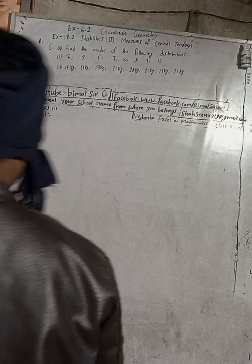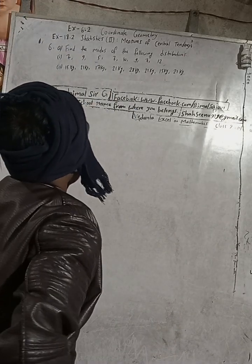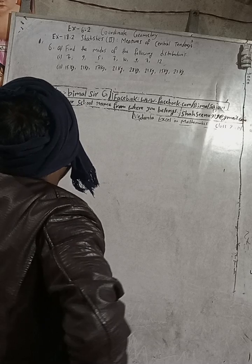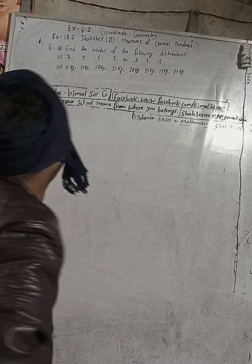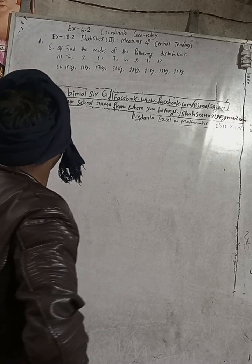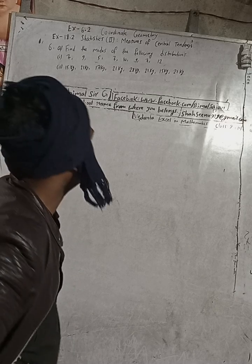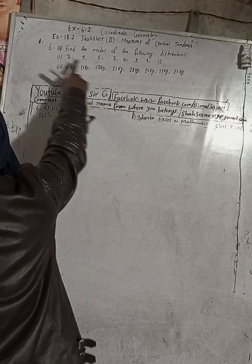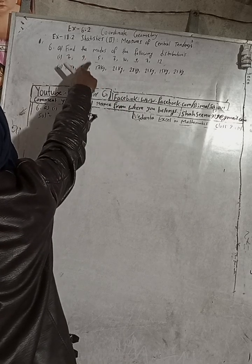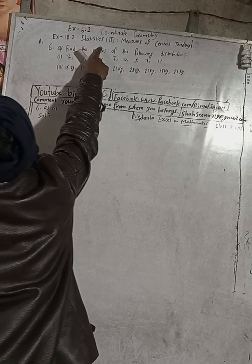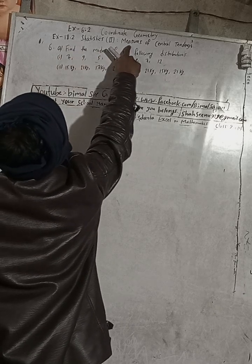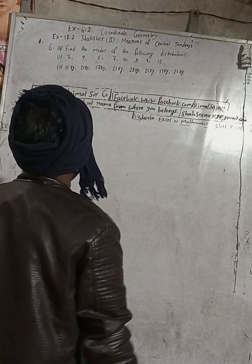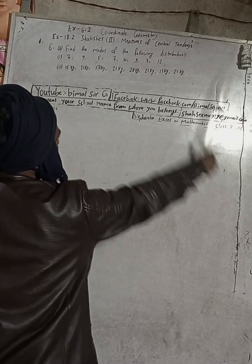Hi class 9 and 10 students, welcome back to our Bimalsarji YouTube channel. In this chilly cold season I am here to warm up your days and nights with exciting content. Let's make it a little warmer with mathematical solutions of class 9 and 10. This is question 6a of exercise 18.2 Statistics, second part: Measures of Central Tendency — Vedant Excellent Method, class 9.